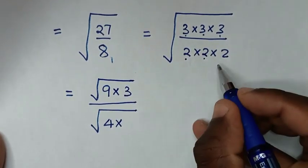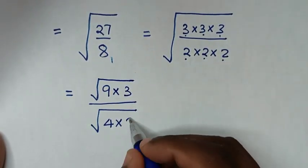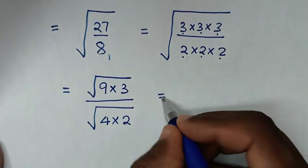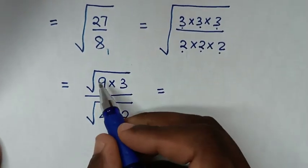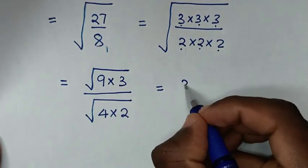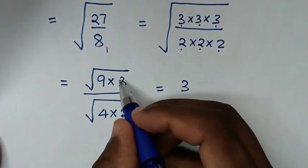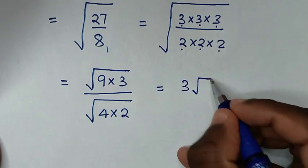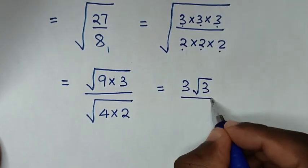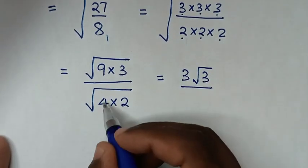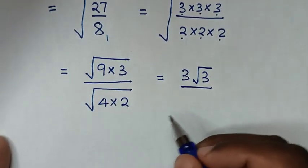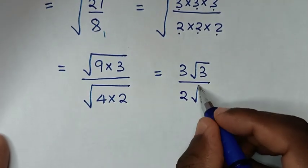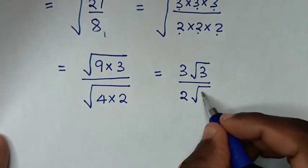In the denominator, 2 times 2 is 4, then times this 2. Then it will be equal to square root of 9, which is 3, times square root of 3. Over in the denominator: square root of 4, which is 2, times square root of 2.